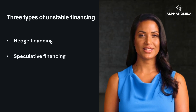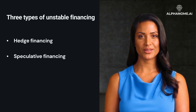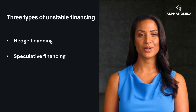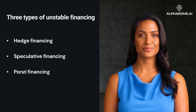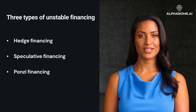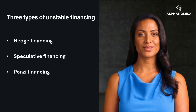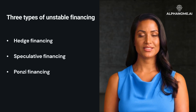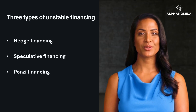The second type is Speculative Financing, where borrowers can pay interest on their loans but must roll over the principal. This introduces some risk. The third type is Ponzi Financing, where borrowers cannot pay either interest or principal and must take out new loans to continue servicing old loans. This is the most unstable position.